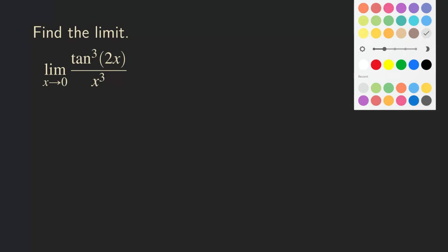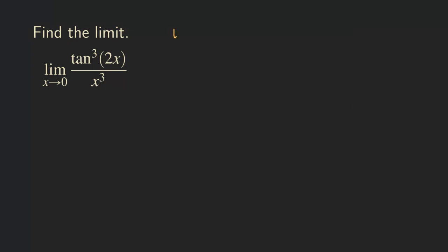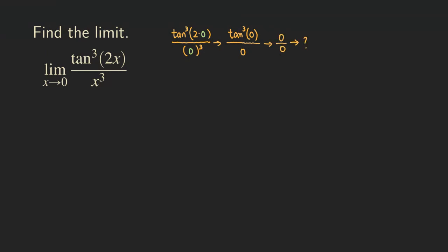So first thing, let's just think about plugging in 0 into all the x's. We have tangent cubed of 2 times something in the numerator, and in the denominator we are getting x cubed. We're going to plug in 0 and see what's going on. The numerator is 2 times 0 inside the tangent cubed function, and 2 times 0 is 0, so it's tangent cubed of 0, which approaches 0. And 0 cubed in the denominator is also 0. So we are getting 0 over 0 — that's an indeterminate form and we cannot draw any conclusion here.